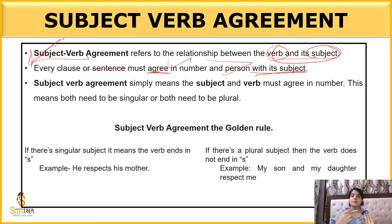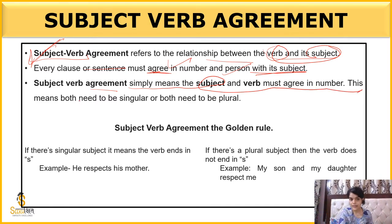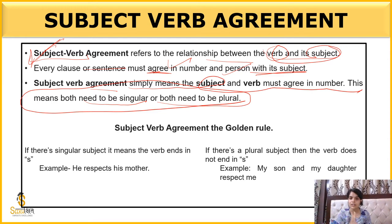If the subject is singular, the verb will be singular; if it is plural, the verb will be plural. Subject-verb agreement means that the subject and verb must agree in number — both need to be singular or both need to be plural. We always have to change our verb according to our subject.